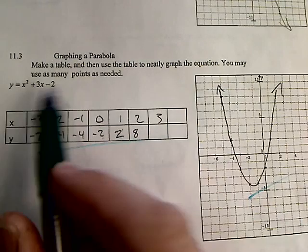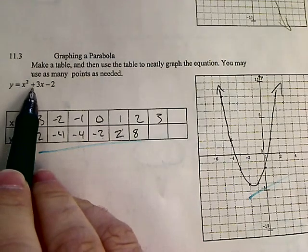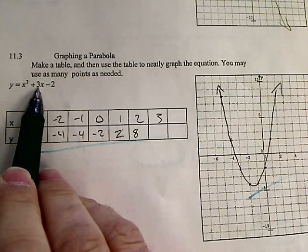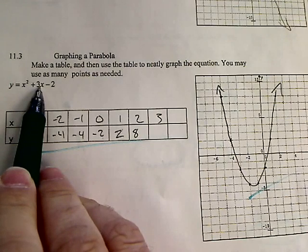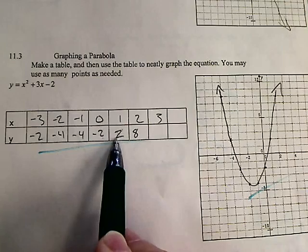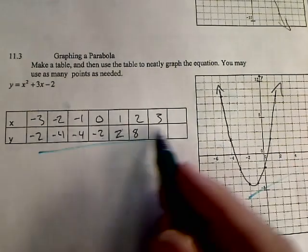Plug in one. One squared is one, plus one times three is three. So it's one plus three is a big fat four, minus two is two. So I go one, two. Do that for all of them.